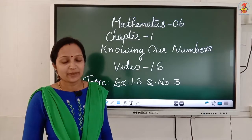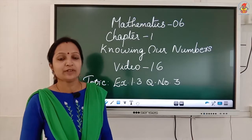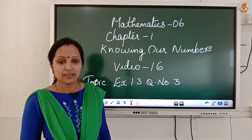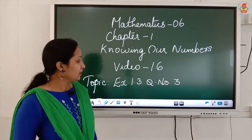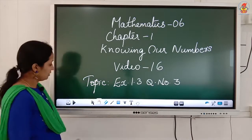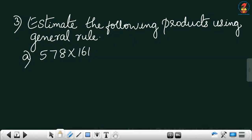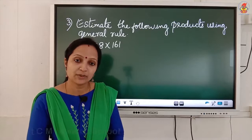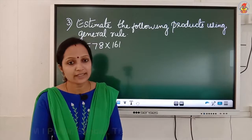Welcome back children. In this video we will do exercise 1.3, question number 3. Now look at the first question: estimate the following products using the general rule. The general rule means you always round off the number to its greatest place.